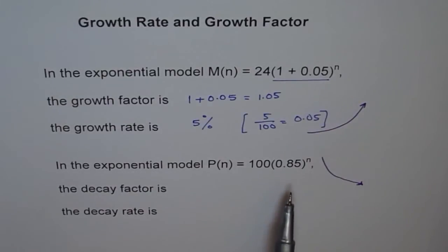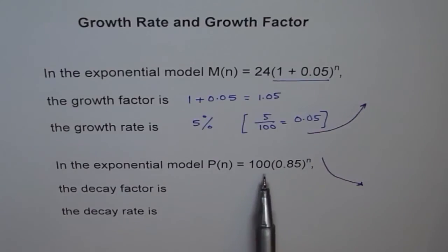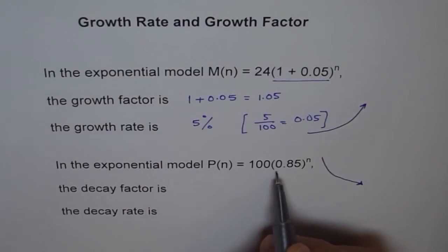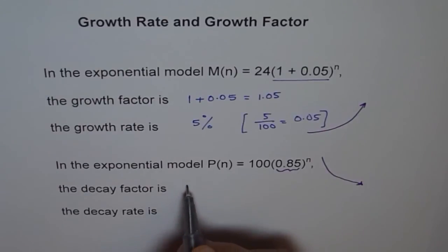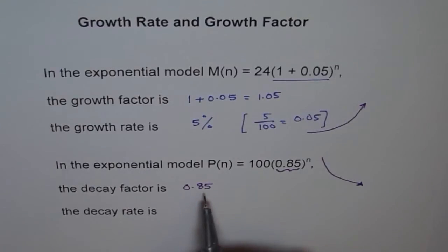Here, because every time you're multiplying by a number which is less than 1, so you get a lesser and lesser number. So therefore, we talk about terms like, instead of growth, we talk like decay factor and decay rate. And now can you tell me what is the decay factor here? Decay factor is the term inside, which is 0.85. So it decays by this power every time, 0.85 to the power of n.